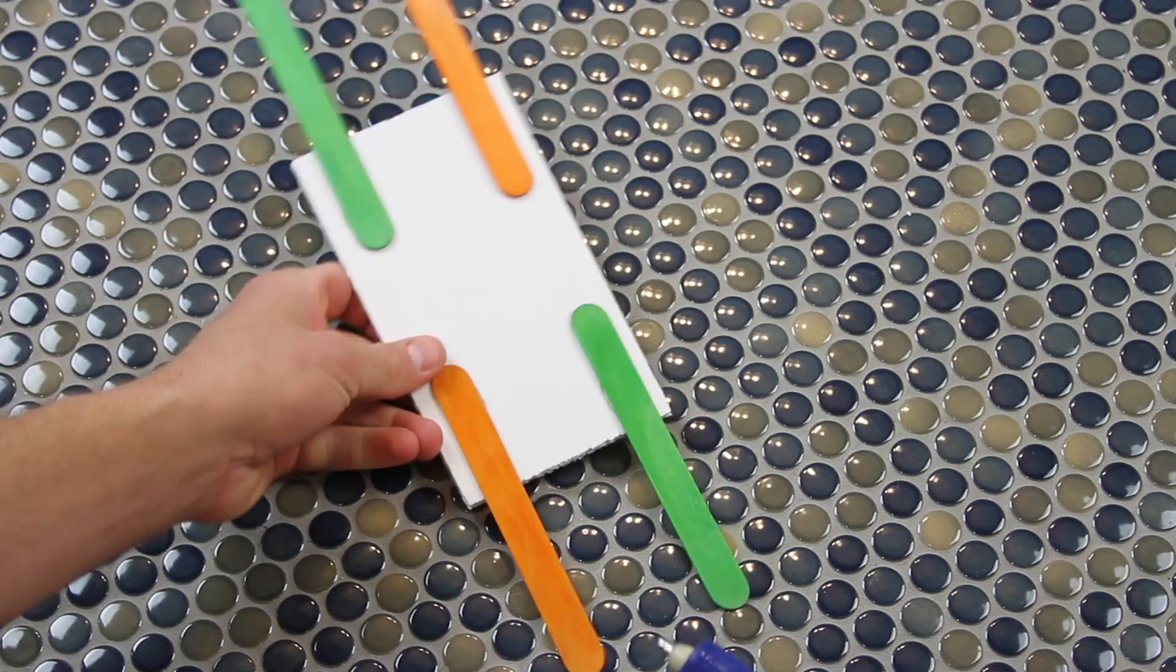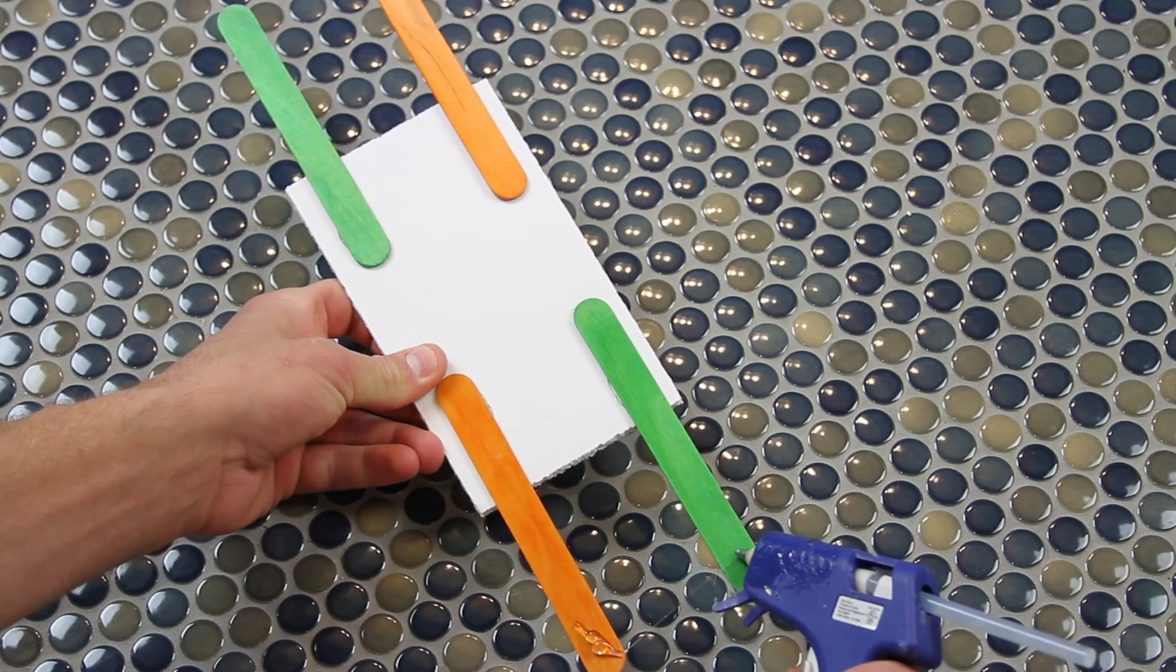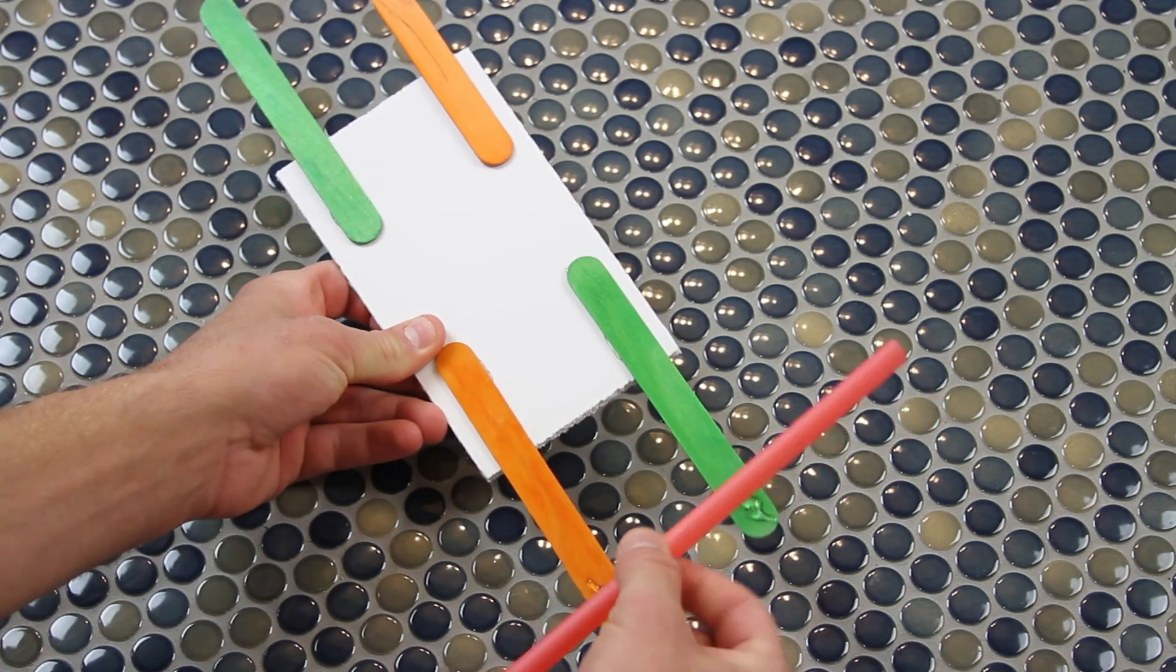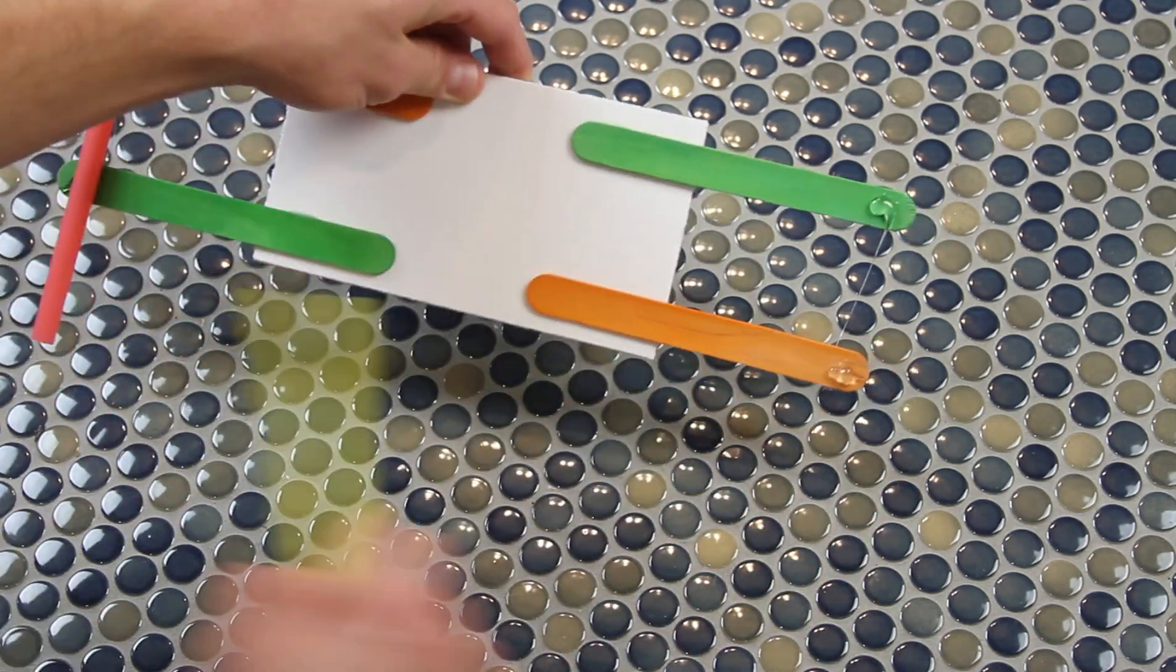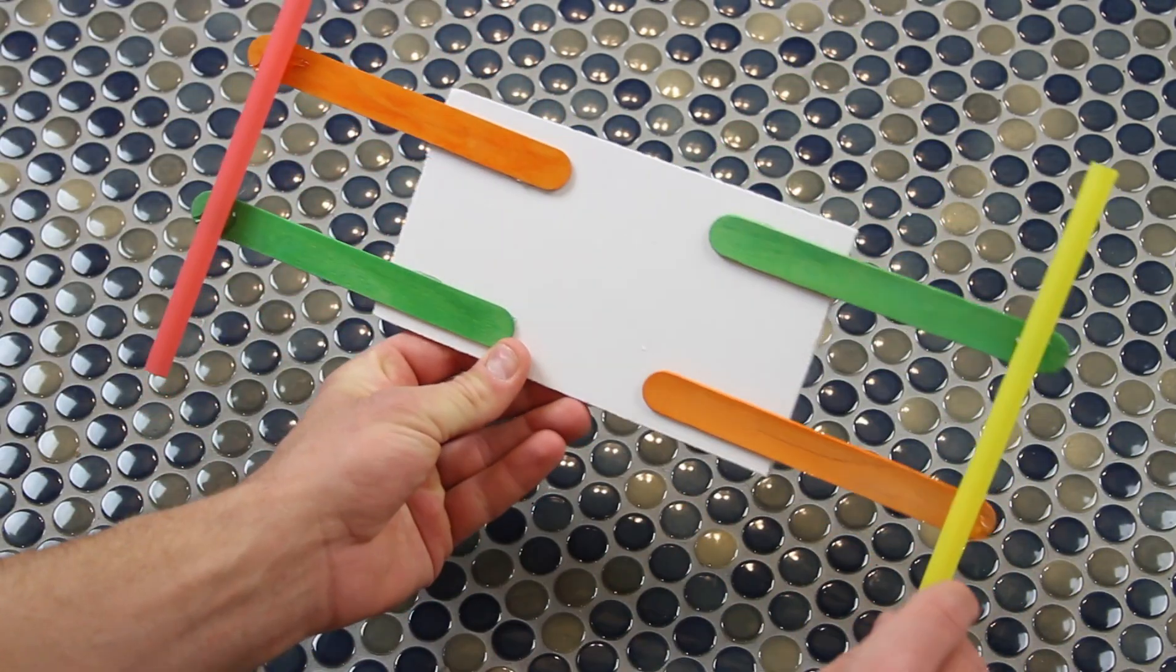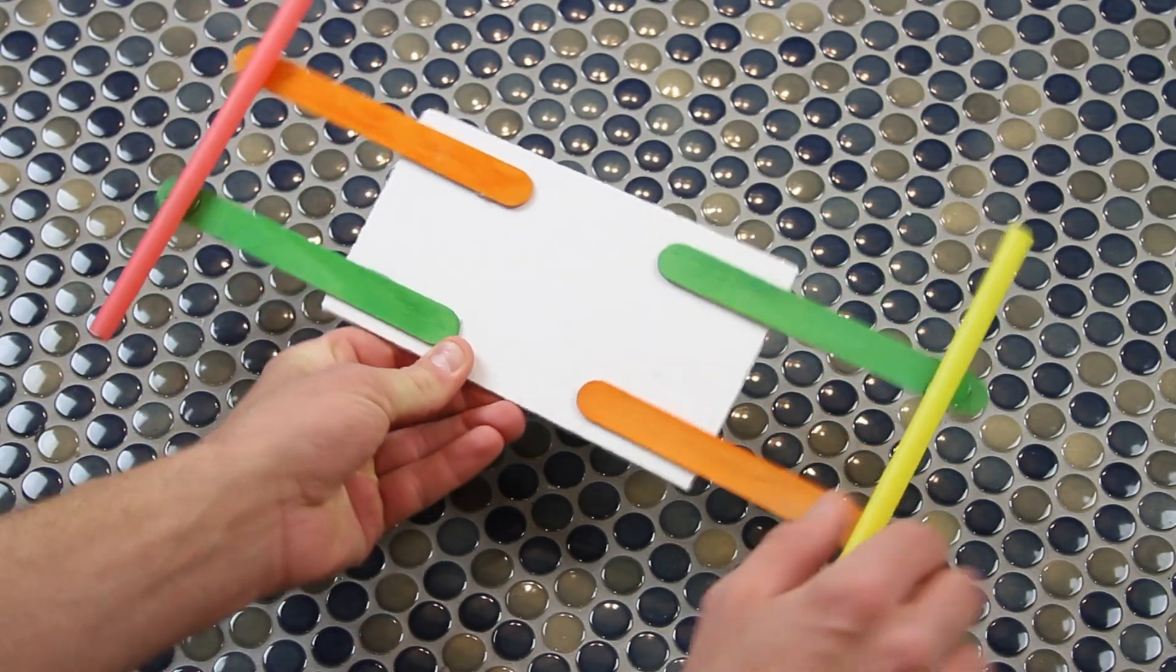Then we want to drop little puddles of hot glue on the tips of those popsicle sticks where we're going to glue straws, which is what the wheels will spin around in. The really important part about these straws is we want to make sure they're pointing in the same direction so the wheels are spinning in the same direction.